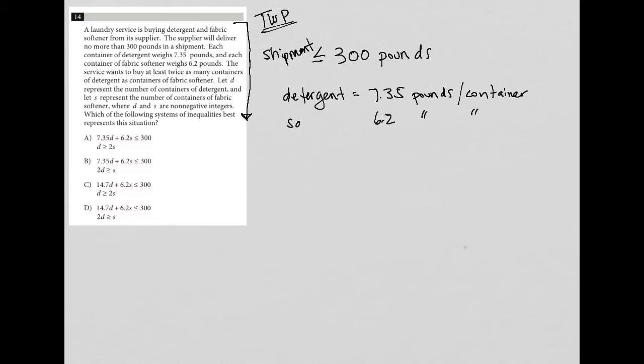The service wants to buy at least twice as many containers of detergent as containers of fabric softener. So basically, we're going to say that 2 times S is equal to D. 2 times the amount of softener is equal to the amount of detergent ordered.